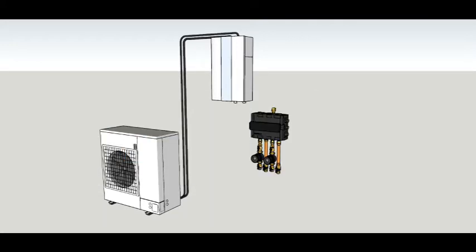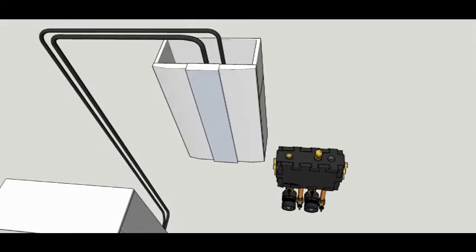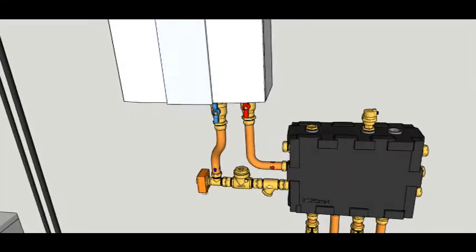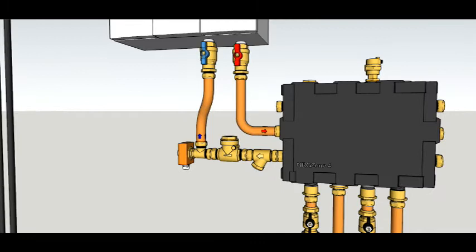We're going to see how to install the system but also how the manifold works internally. There are three ports on the left and right of the manifold that we're now using to connect the boilers. The heat pump uses the middle and bottom connection on the left, whereas the gas boiler uses the top and middle connection on the right.